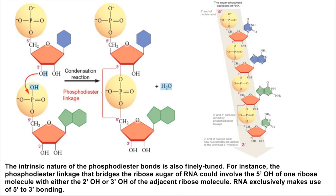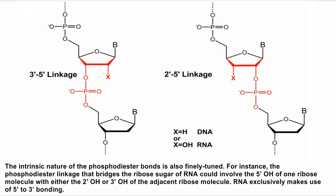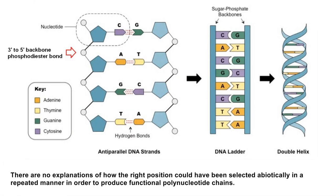The intrinsic nature of the phosphodiester bonds is also finely tuned. For instance, the phosphodiester linkage that bridges the ribose sugar of RNA could involve the 5' OH of one ribose molecule with either the 2' OH or 3' OH of the adjacent ribose molecule. RNA exclusively makes use of 5' to 3' bonding. There are no explanations of how the right position could have been selected abiotically in a repeated manner in order to produce functional polynucleotide chains.